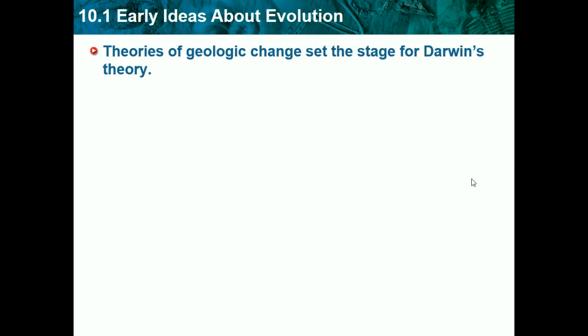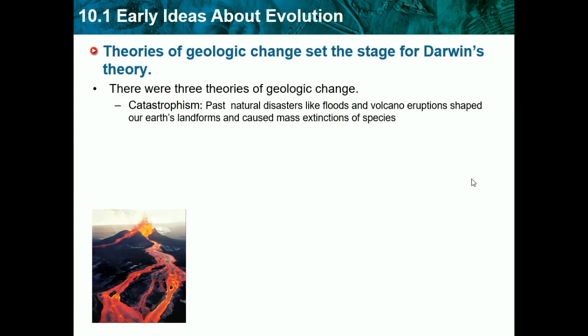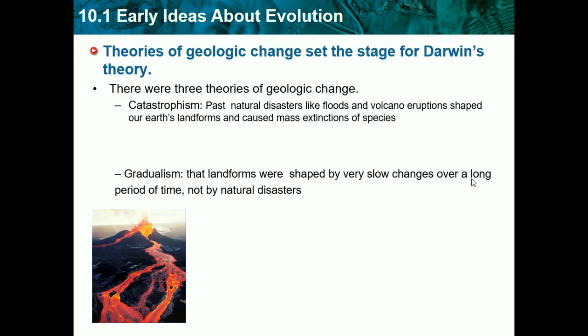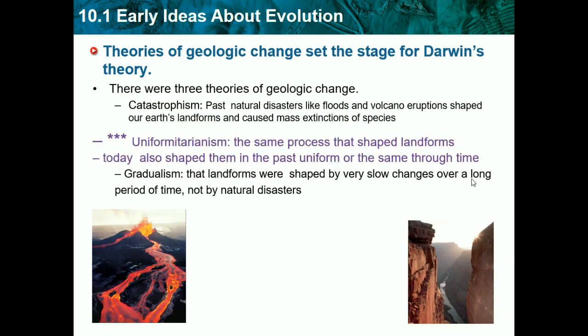Theories of geological change set the stage for Darwin's theory. There were three theories of geologic change. We have catastrophism: past natural disasters like floods and volcano eruptions shaped Earth's landforms and caused mass extinction of species — like the meteor that apparently killed all the dinosaurs. We have gradualism: landforms were shaped by very slow change over a long period of time, not by natural disaster, like how a river can cut a canyon. Then we have uniformitarianism: the same processes that shaped landforms today also shaped them in the past — the same thing happens throughout time.